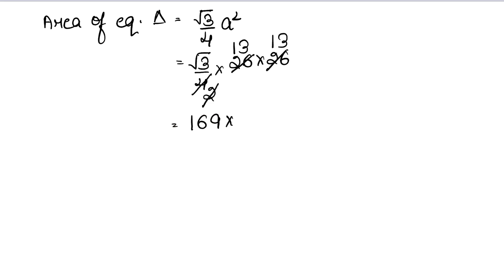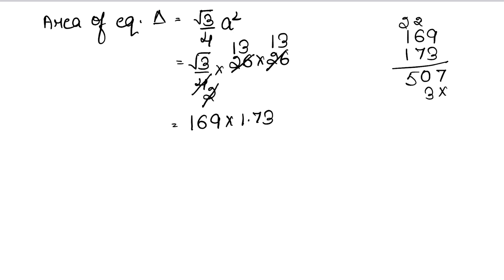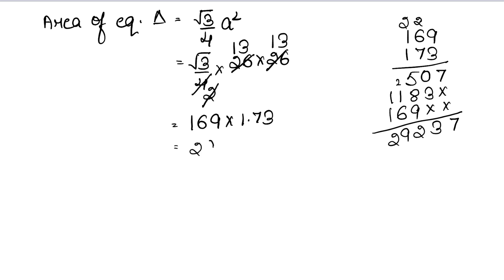We calculate 26 into 26 is 676, divided by 4 gives 169. Multiplying 169 by the value of root 3, which is 1.73, we get 169 into 1.73. Working through the multiplication, the result is 292.37 cm².